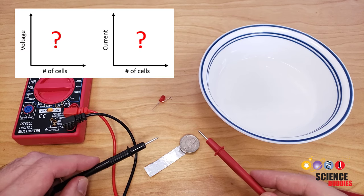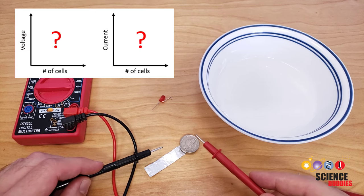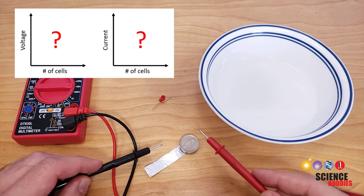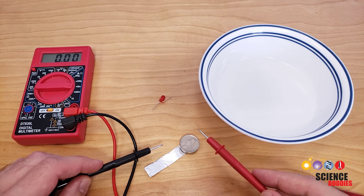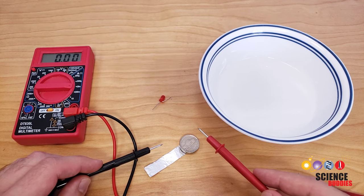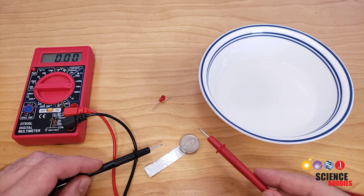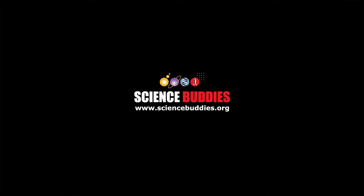For a science project, you can investigate how the voltage and current produced by the battery change with the number of cells. For written instructions for this and over a thousand other hands-on science and engineering projects, visit us online at www.sciencebuddies.org.